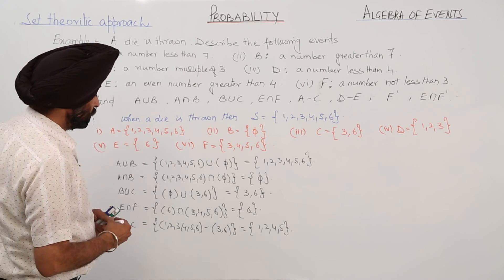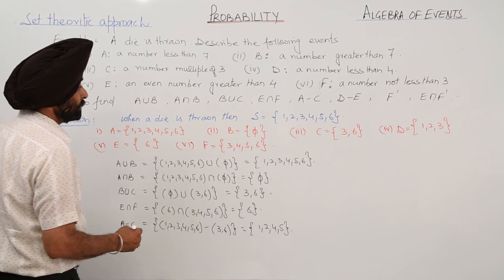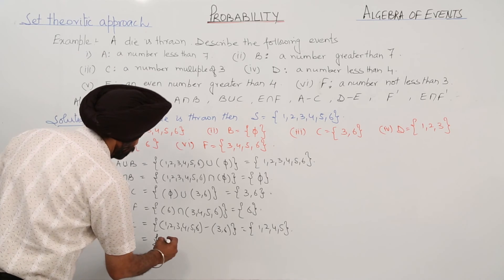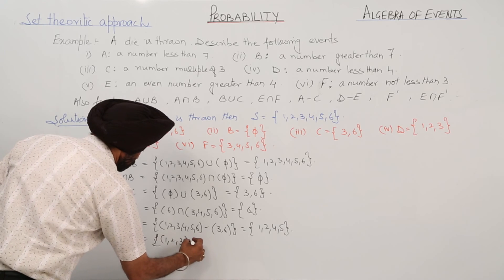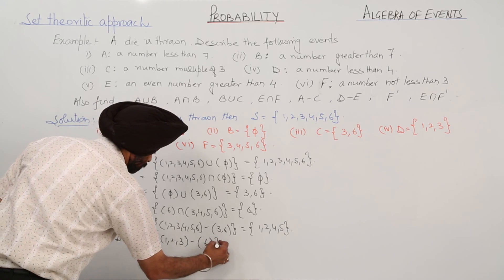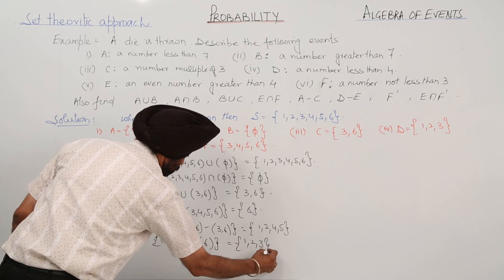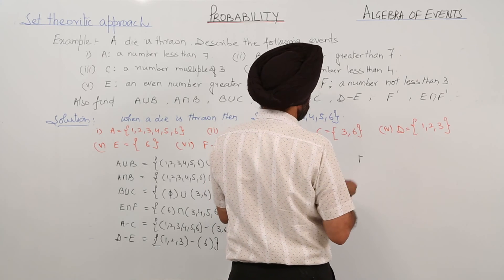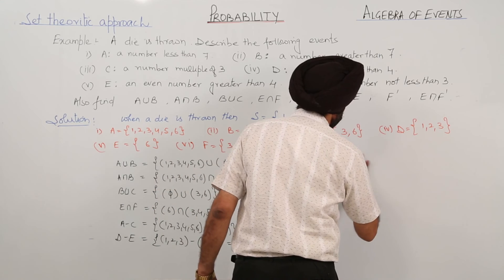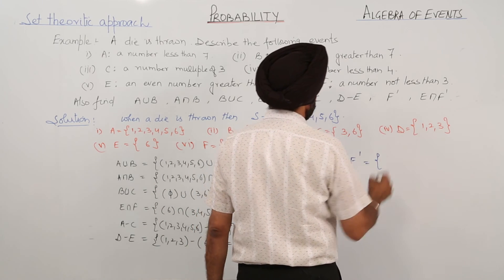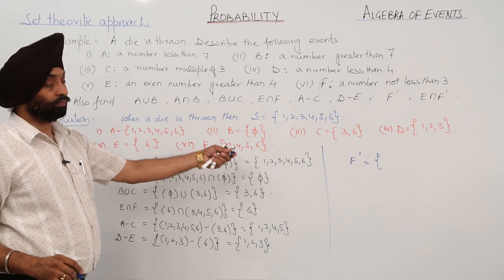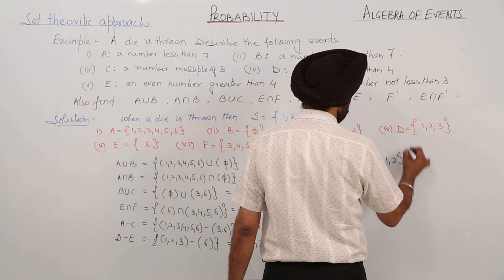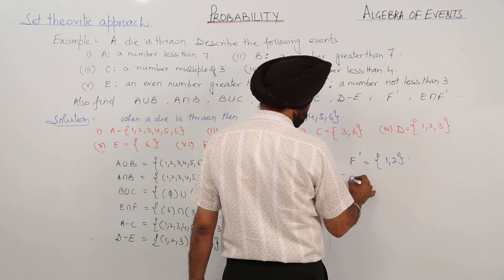Then we are having D difference E. D is {1, 2, 3} and E is {6}, so the result will be {1, 2, 3}. After this we are having F complement (F'). Elements of F are {3, 4, 5, 6}, so leaving {3, 4, 5, 6} from the sample space, F' will be {1, 2}.